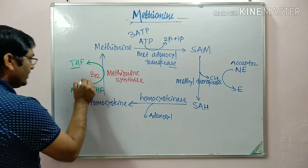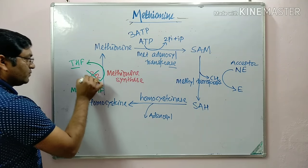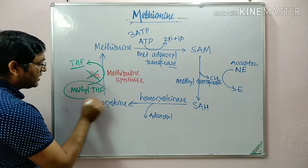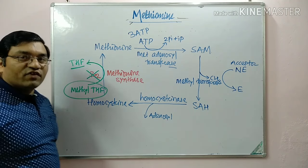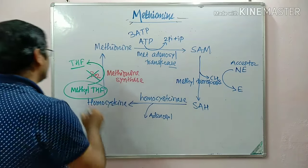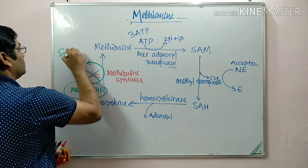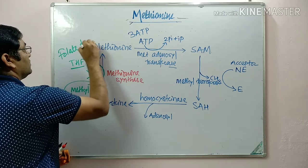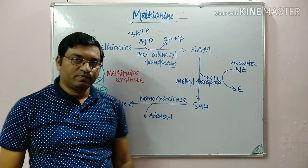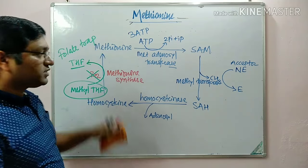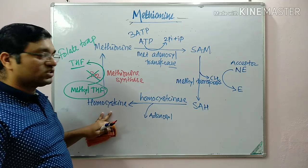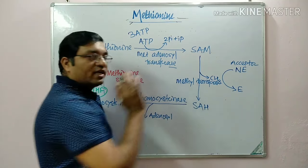In vitamin B12 deficiency, tetrahydrofolate gets trapped as methyl tetrahydrofolate, and there is functional deficiency of tetrahydrofolate — this is known as the folate trap. So this folate trap occurs in vitamin B12 deficiency. This completes the first step in methionine metabolism: conversion of methionine into homocysteine and the transmethylation reaction.